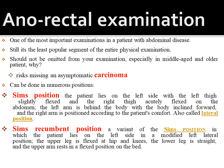The first is Sims' position: the patient lies on the left side with the left thigh slightly flexed and the right thigh acutely flexed on the abdomen. The left arm is behind the body with the body inclined forwards, and the right arm is positioned according to the patient's comfort. This is also known as the lateral position. The modified left lateral position has the upper leg flexed at the hip and the lower leg straight, with the upper arm resting in a flexed position on the bed.